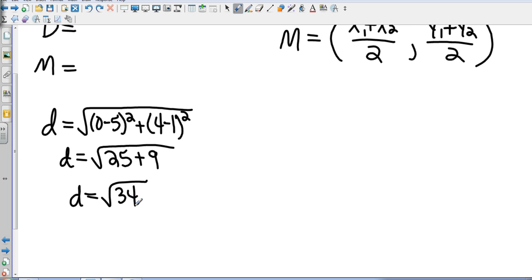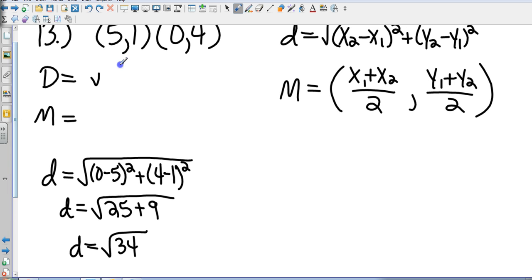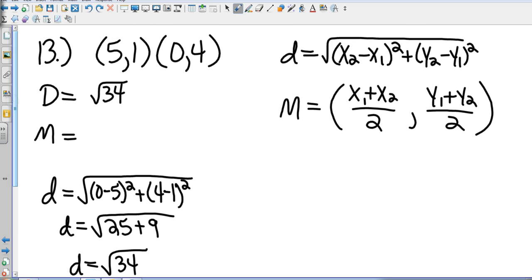Now, if that can be simplified, go ahead and simplify it, but in this case, it's just going to be the square root of 34. Now, midpoint is fairly simple. I just add the x's together, 5 plus 0 is 5, and then I divide that by 2, so that's just 5 over 2. And then I add the y's together, 1 plus 4 is 5, and I'm going to divide that by 2 as well. So, the coordinate is 5 halves, 5 halves, with a distance of the square root of 34.